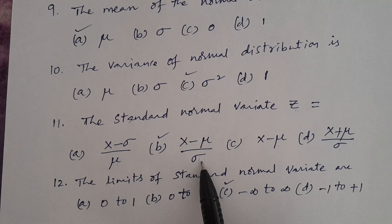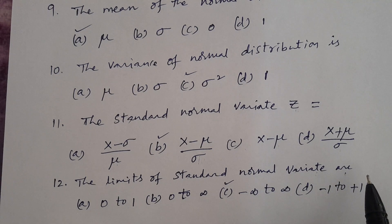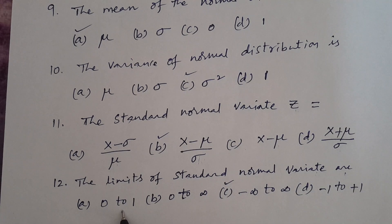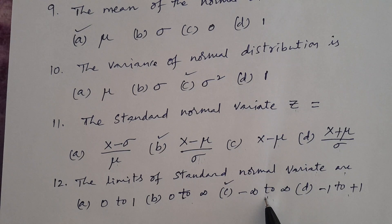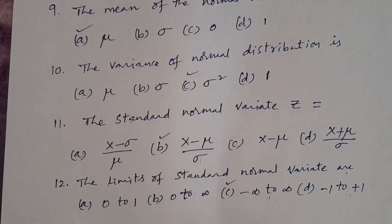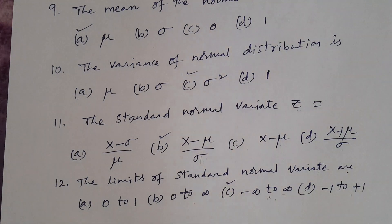Question number twelve. The limits of the standard normal variate are? Options: A. 0 to 1, B. 0 to infinity, C. minus infinity to infinity, D. minus 1 to 1. The correct answer is C, minus infinity to infinity. The limits of the standard normal distribution are the same as the normal distribution — minus infinity to infinity. We will discuss more in the next class. Thank you.